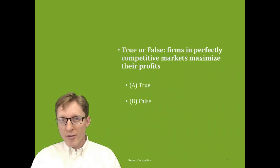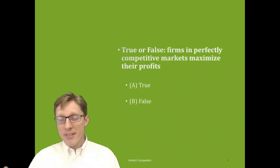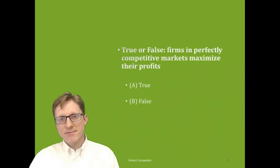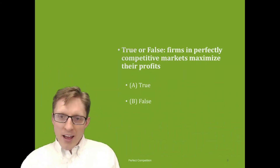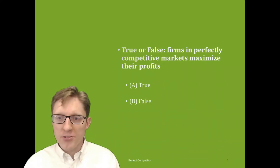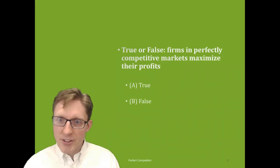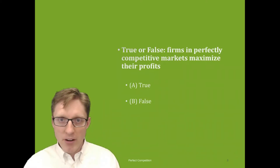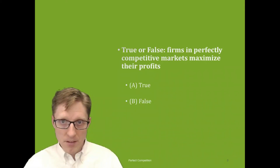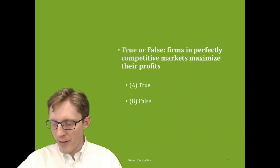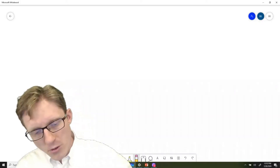I want to ask you a quick true or false question to think about: firms in perfectly competitive markets maximize their profits — true or false? A lot of people make the wrong choice and think the answer is false, that firms are not maximizing their profits. That's not actually true. Firms in perfectly competitive markets are doing the best they can to maximize their profits. It turns out, however, that based on the assumptions that form the outcomes in perfect competition, the best a firm can do is to earn zero profits — but it still comes out of profit maximization.